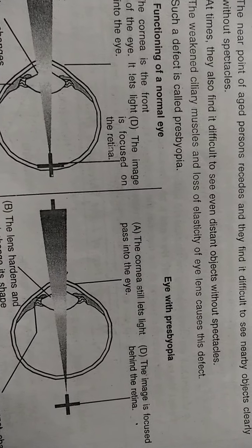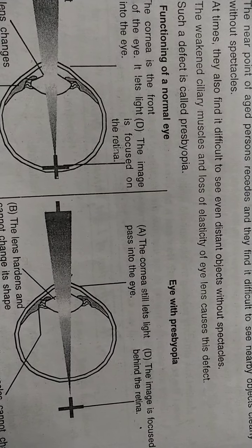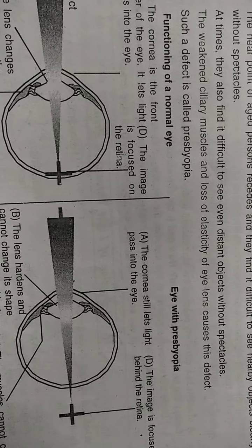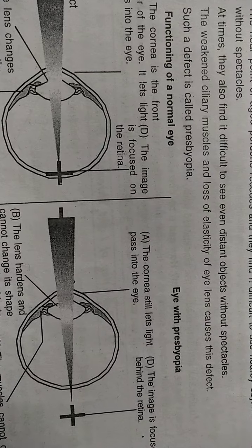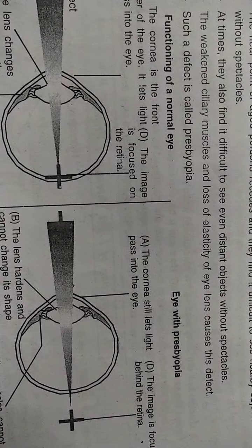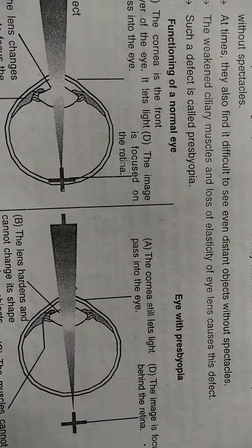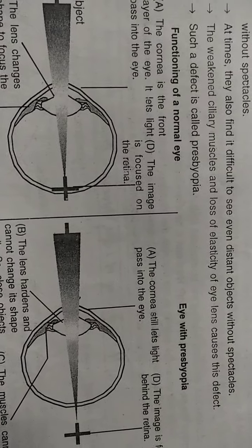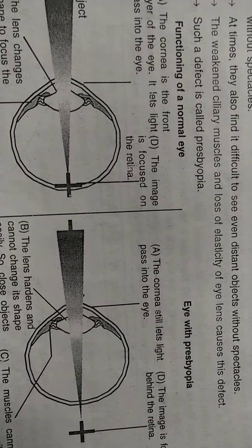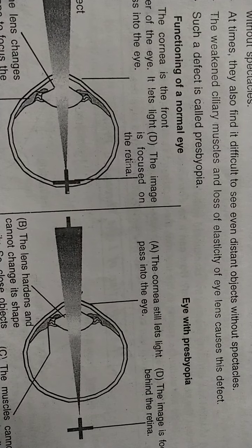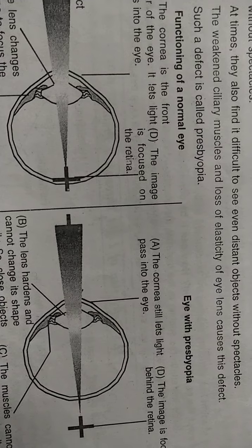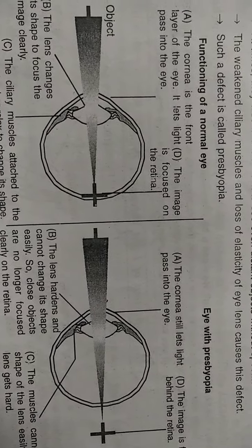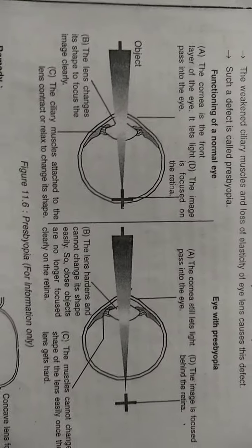The weakened ciliary muscles and loss of elasticity of the eye lens — the lens also has some elasticity, and in old age its elasticity decreases — these two reasons cause this defect. Weakening of ciliary muscles and decreasing or loss of elasticity of the lens causes presbyopia. We will also understand this with a figure.